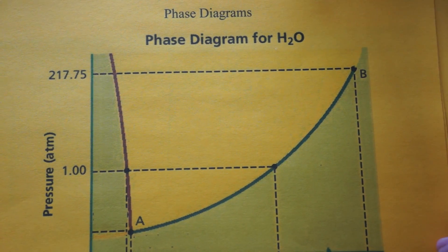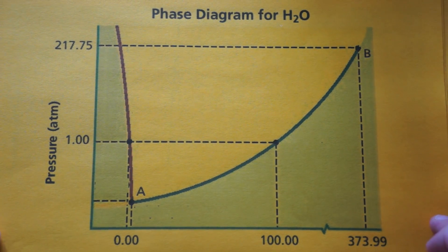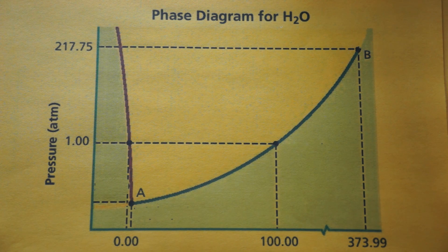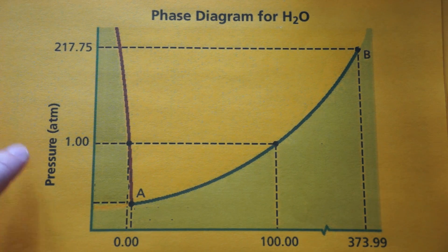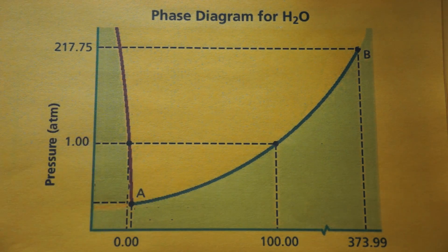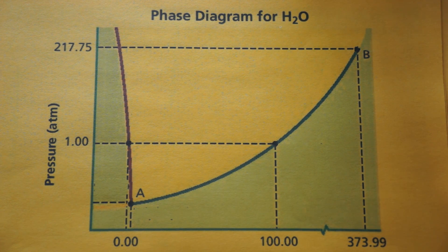This video discusses phase diagrams. I'm going to cover water and carbon dioxide. A phase diagram is a relationship between pressure, temperature, and the phases that these combinations produce.